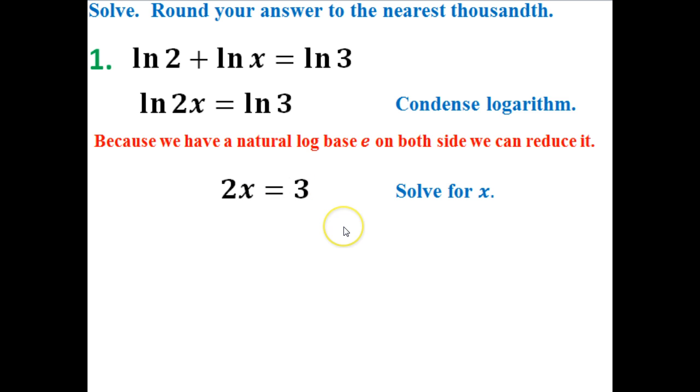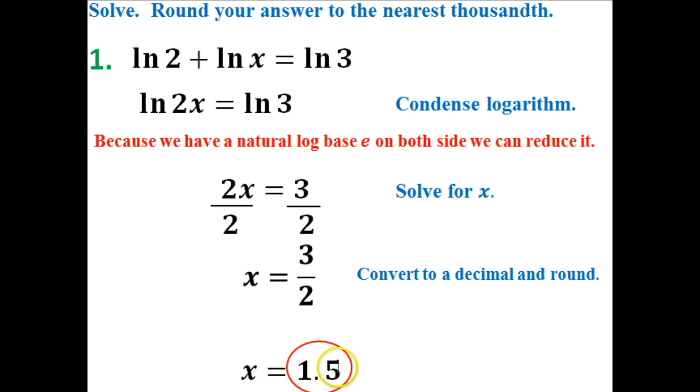Now what we need to do is solve it for x, which means I'm going to divide both sides by 2. When I divide both sides by 2, x equals 3 halves. It asks me to round my answer to the nearest thousandth. So I need to convert it to a decimal and round it. When I convert it to a decimal, this is just 1 and a half. So that is my easiest one that I need to do. 1.5 is just fine.